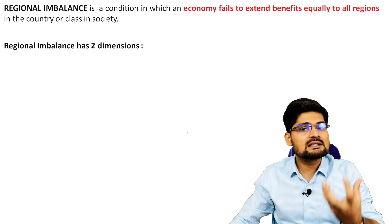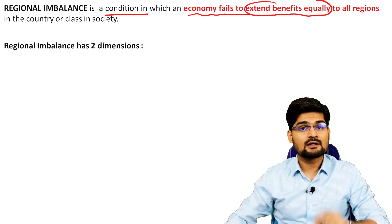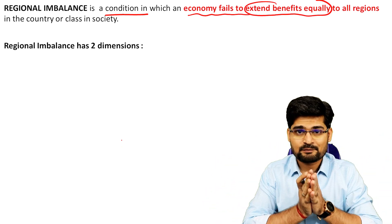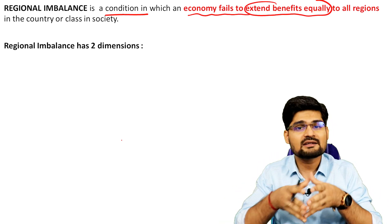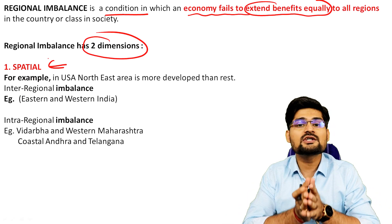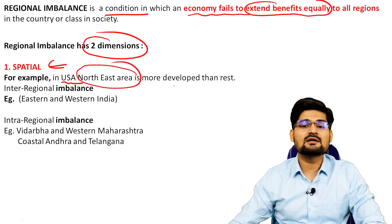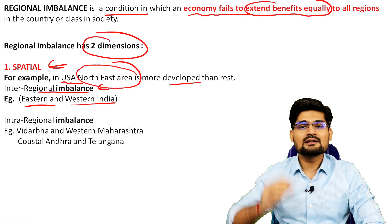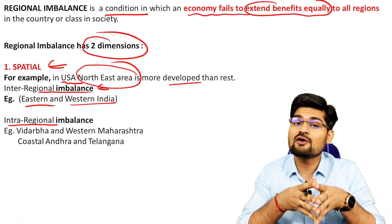Regional imbalance is a condition when the economy fails to extend its benefits equally to all regions — it is concentrated in some areas and absent in others. For example, the Green Revolution in India benefited some states and not others. Regional imbalance has two dimensions in regional geography: the first is the spatial dimension — the locational and aerial aspect. In the USA, northeastern areas are more developed than many other parts; in India, inter-regional imbalance exists between eastern and western, northern and southern India.